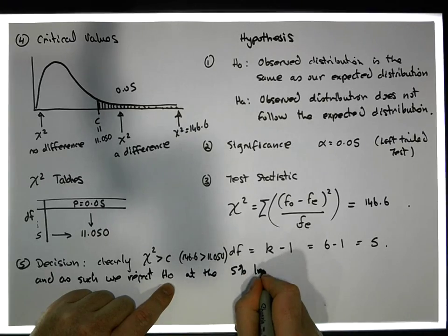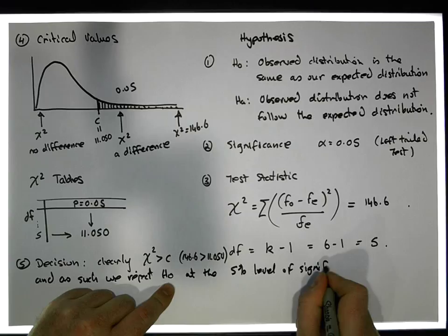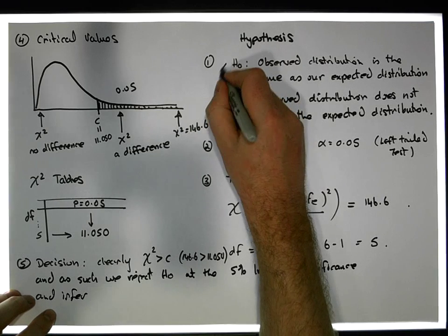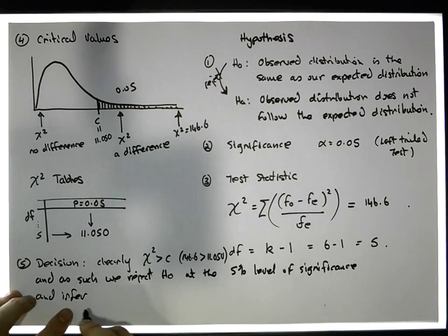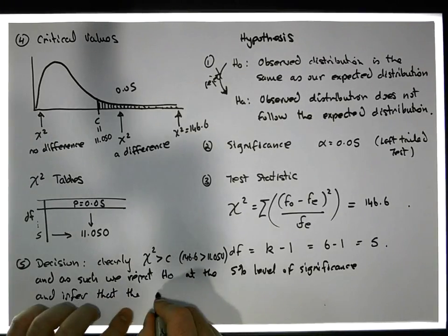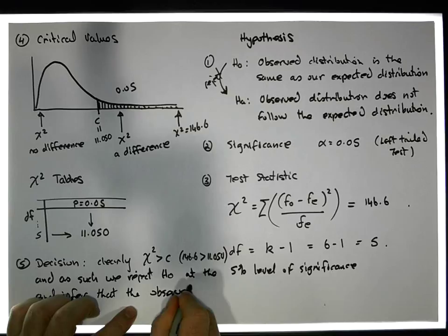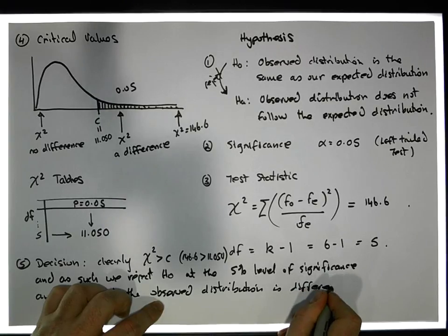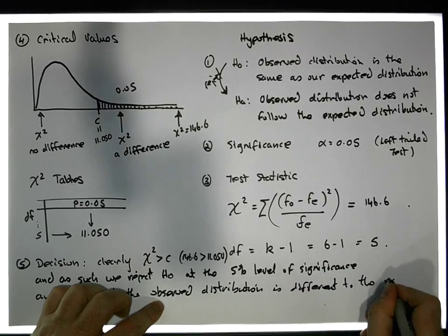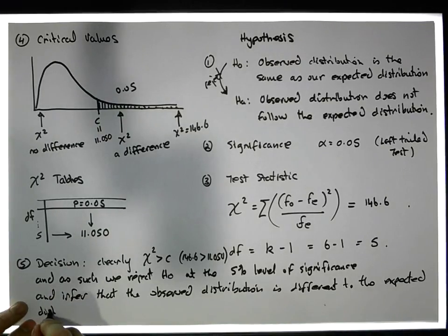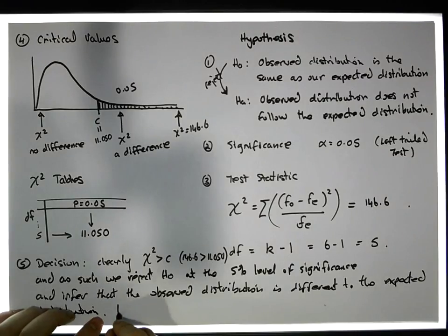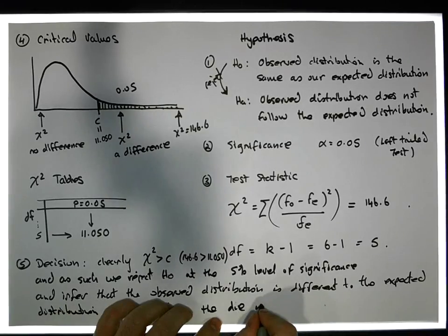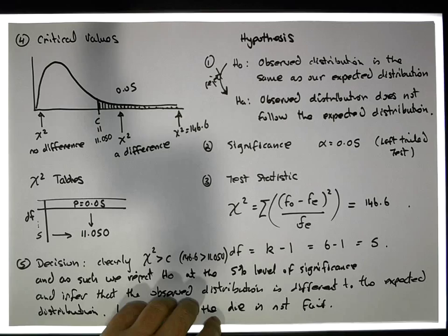And infer that the observed distribution is different to the expected distribution. What does that mean? In particular, the die is not fair.